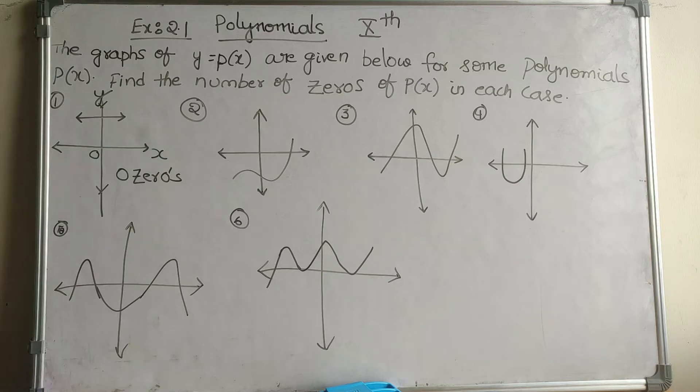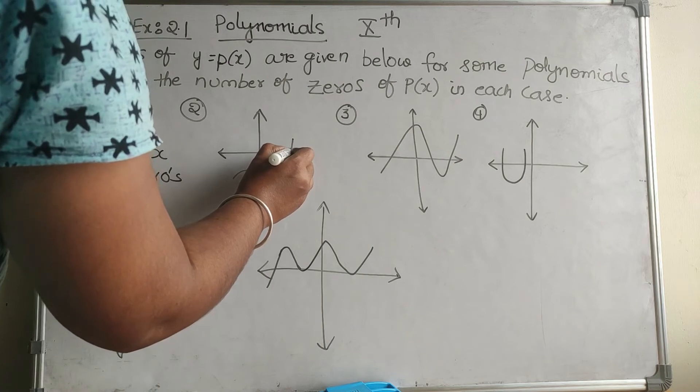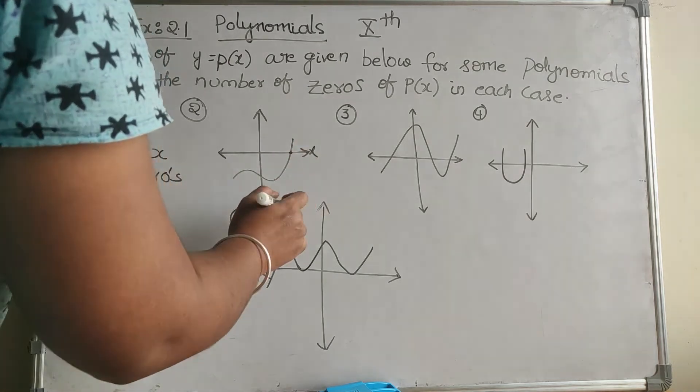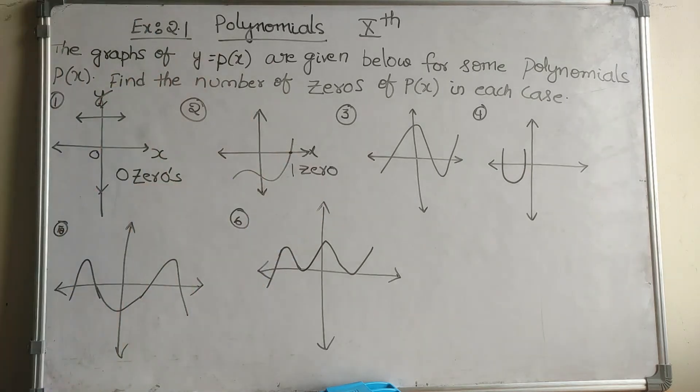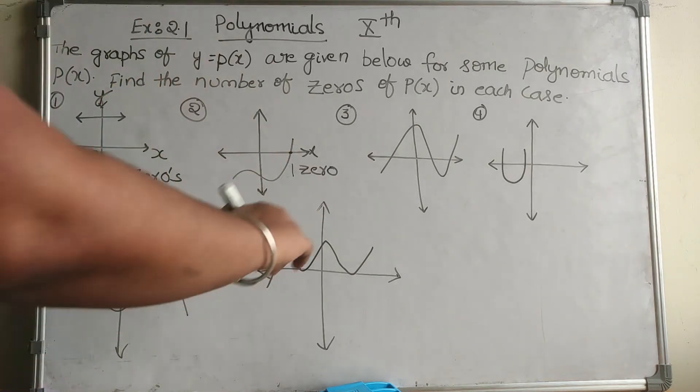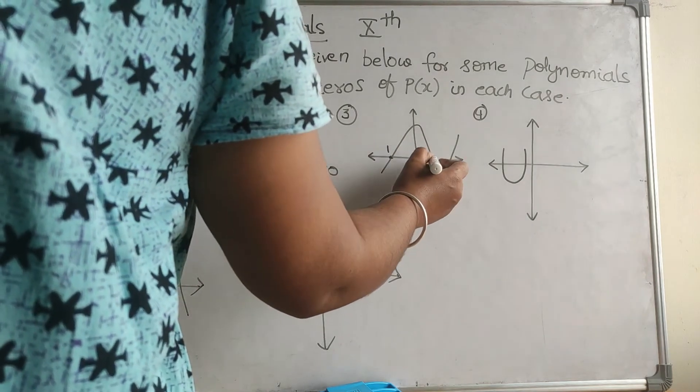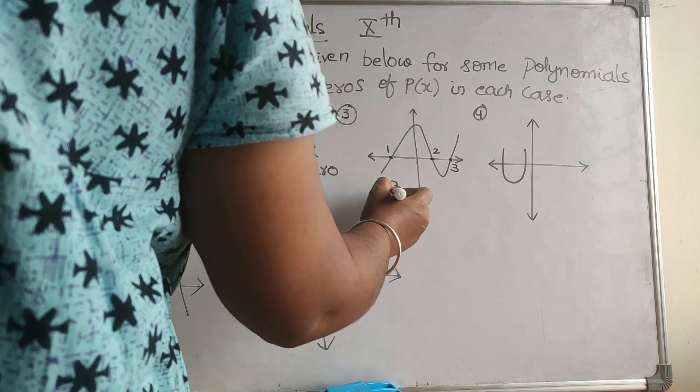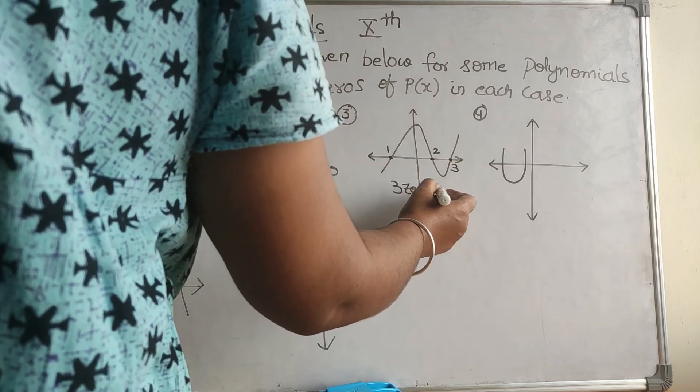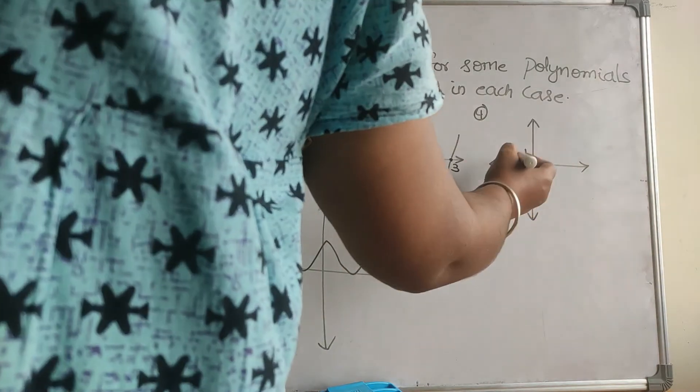When it comes to the second picture, if you see there is one point that touched on the x-axis, so it has one zero. In the third picture, if you see, here is one point, here is a second point, here is a third point, so it has three zeros.